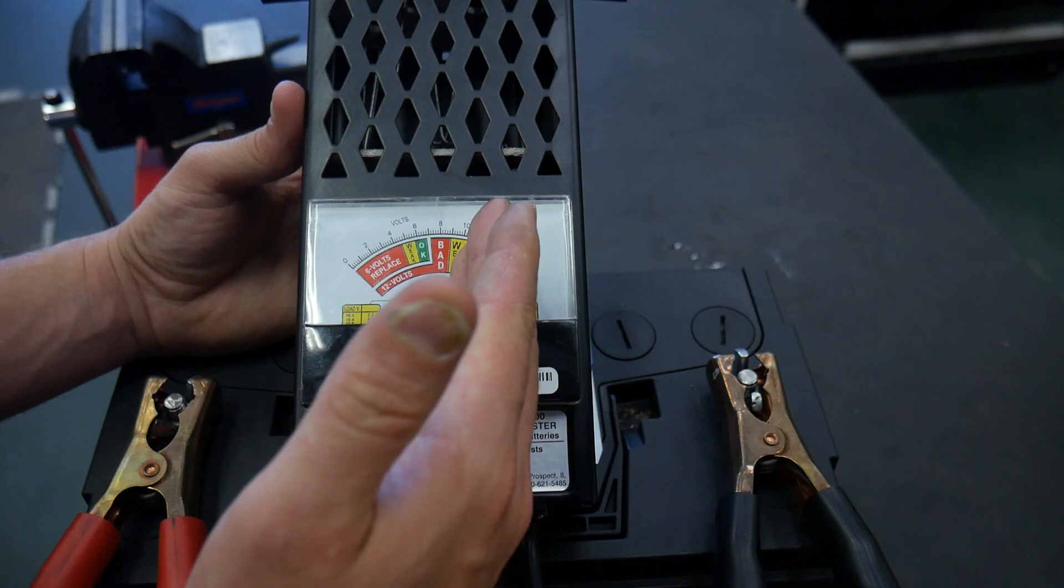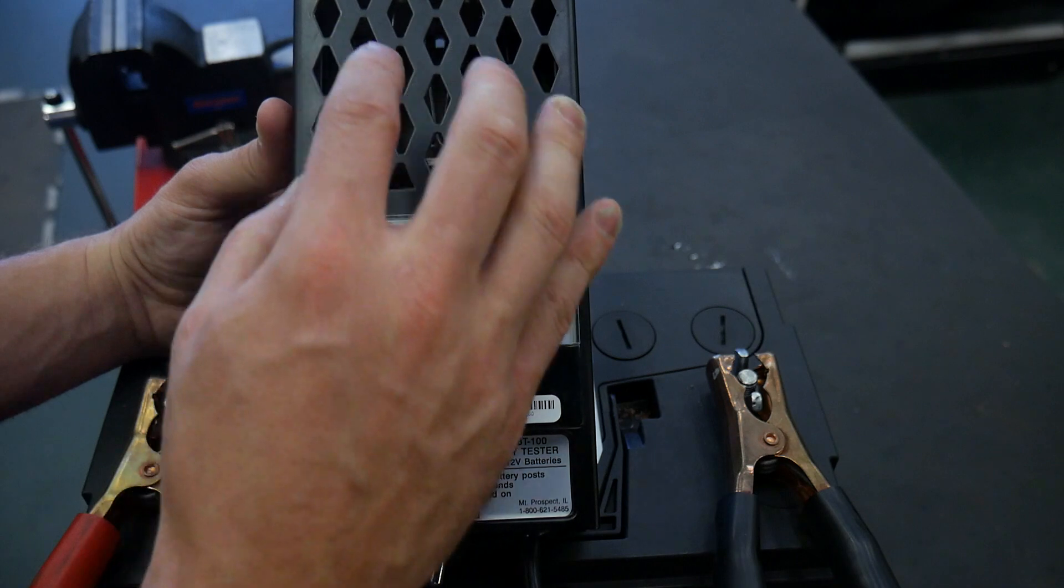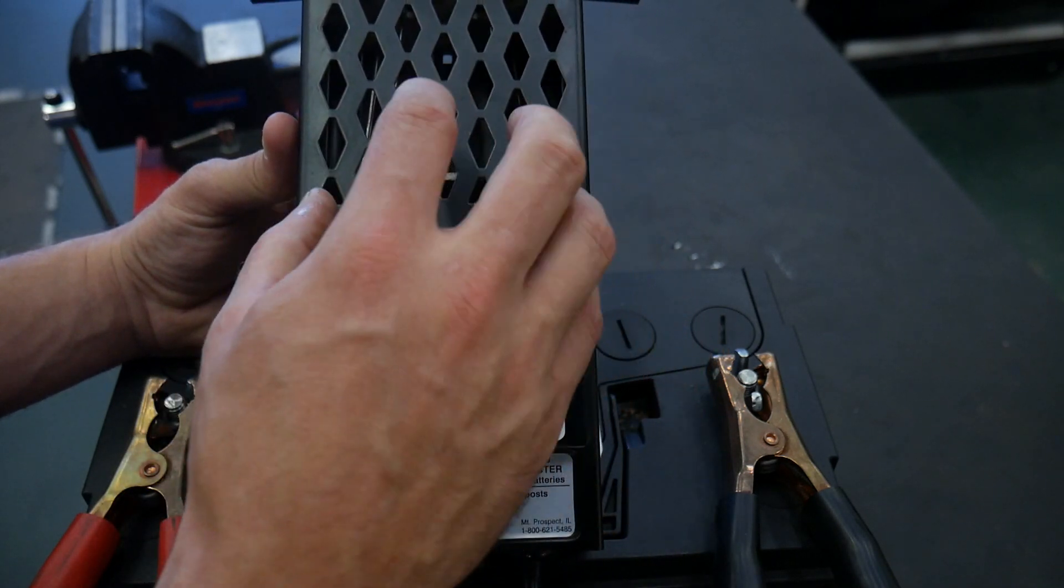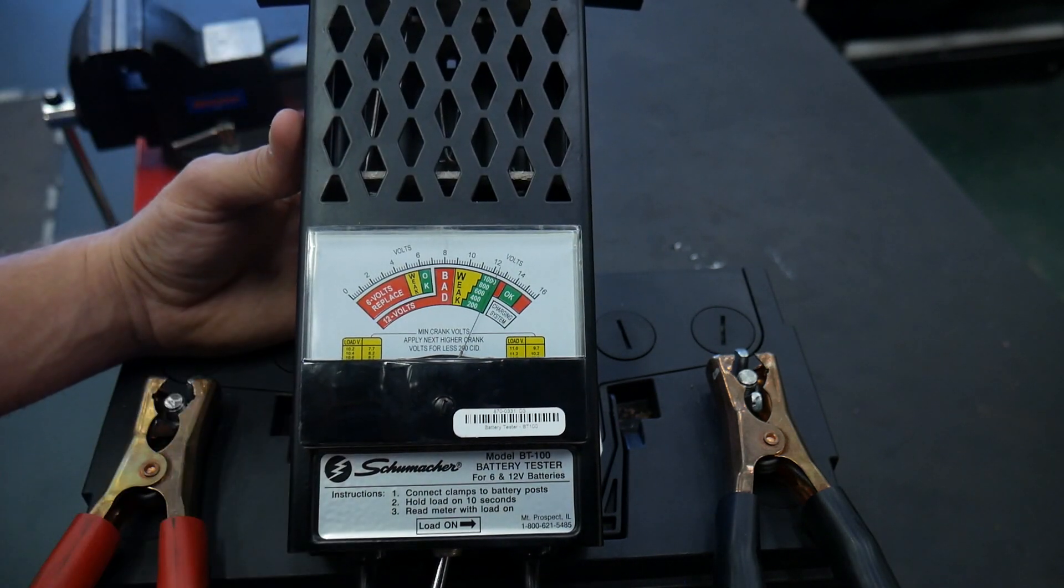Again, it's an analog display. You can see the elements in the back through the mesh, the air flows to keep it cool, but essentially it's just a toaster. It's allowing current to pass through the element and it's going to create heat, applying the load to the battery.